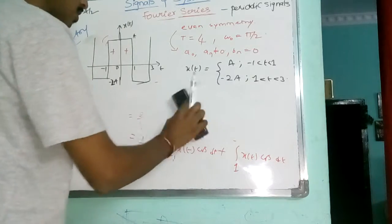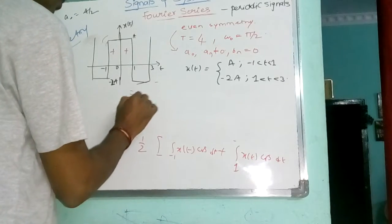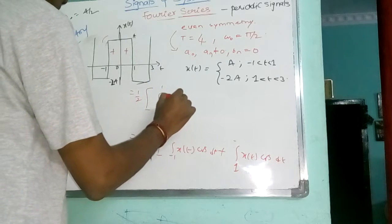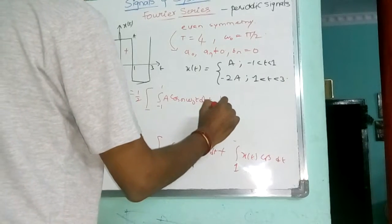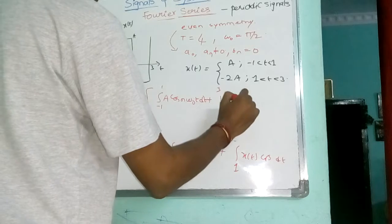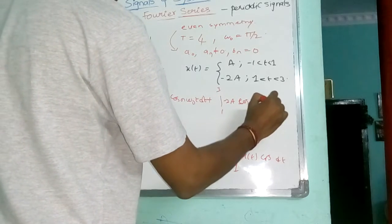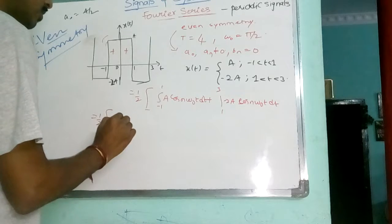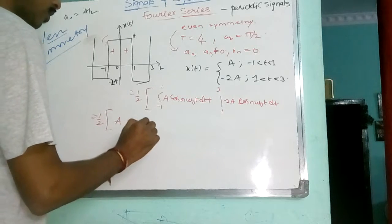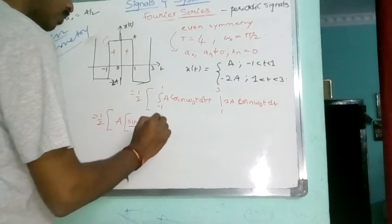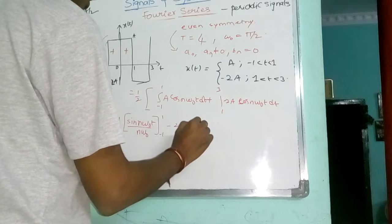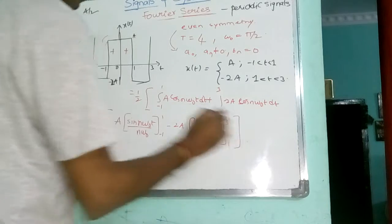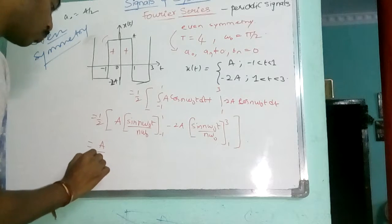This is given by 1 by 2 into A. This is: sin N omega 0 T by N omega 0, from minus 1 to 1; plus the integral from 1 to 3. Overall, I can take A by 2 N omega 0 as common. Here it is: sin omega 0 T, sin N omega 0 T, plus sin N omega 0 T, minus 2 into sin 3N omega 0 T.